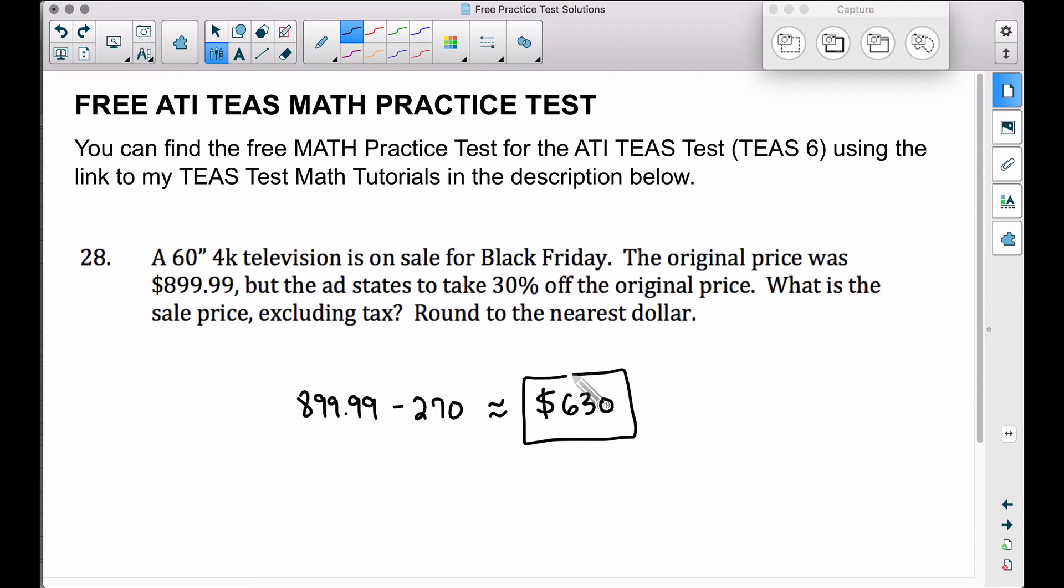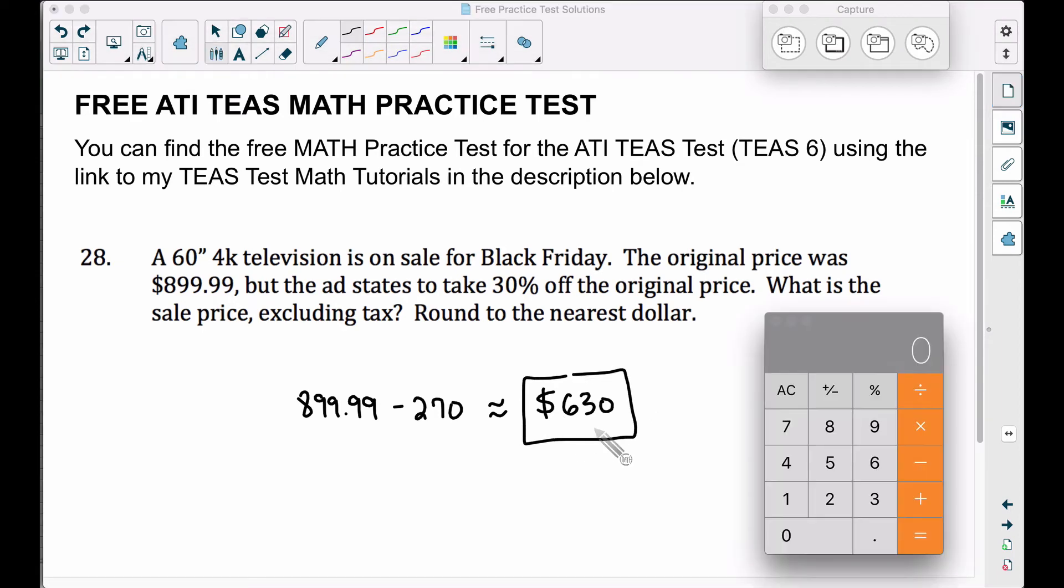Now, let me show you a different way of doing this problem. We can get this price of 630 bucks. We can get it with one step instead of two steps. We did do two steps to get this answer. We found 30% of 899.99. That is your discount. So we subtract that off the original price to get the sale price.